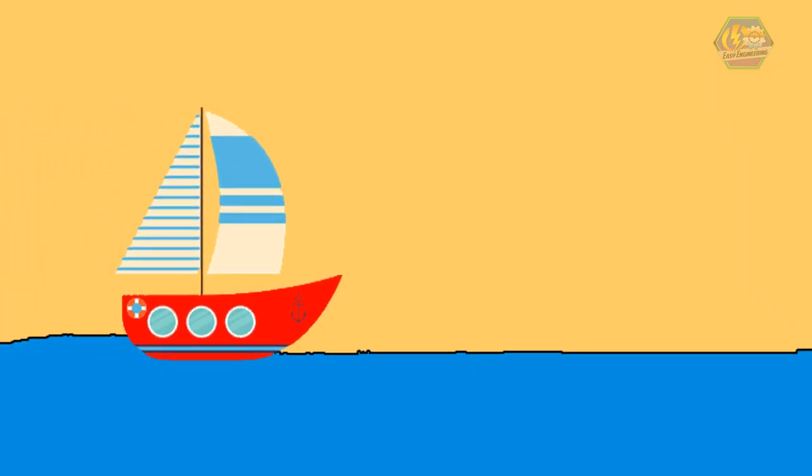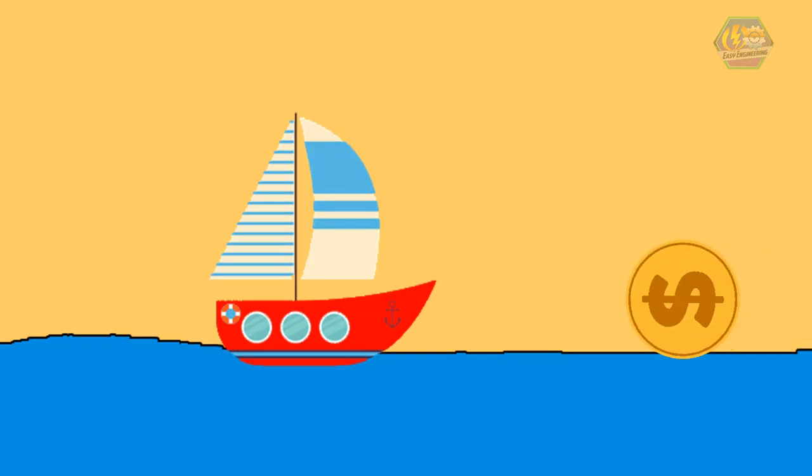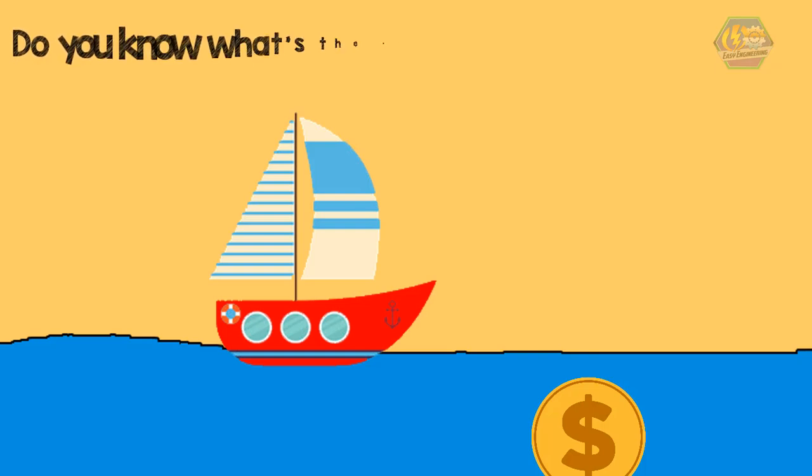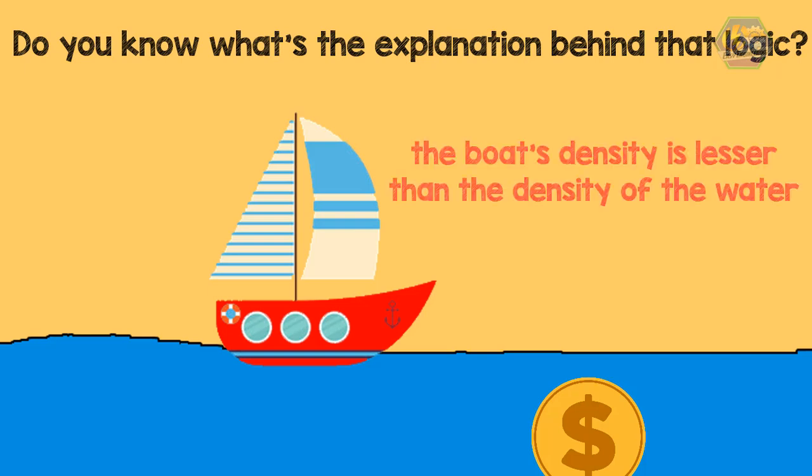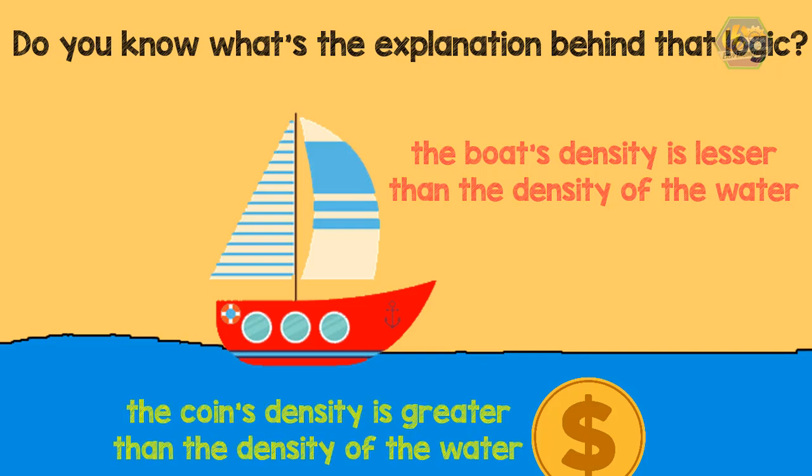Now we all know that the boat will float in the sea and the coin will sink. But do you know what's the explanation behind that logic? The boat floats in the water because the boat's density is lesser than the density of the water. And the coin sinks because the density of the coin is greater than the density of the water.